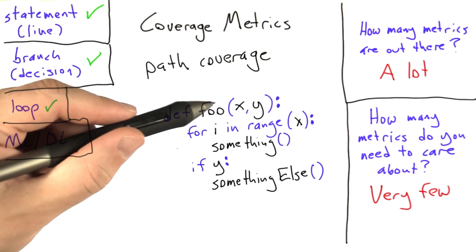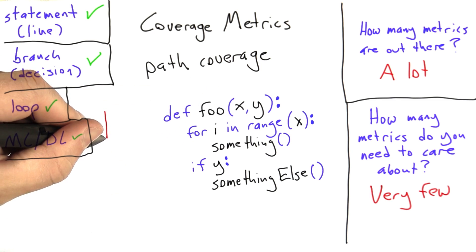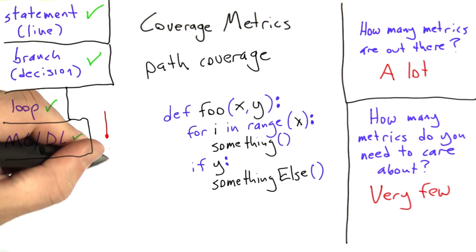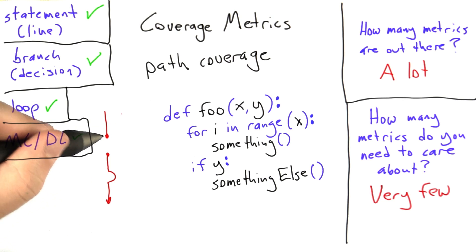So let's first look at the execution if x is 0 and y is true. Range 0 is the empty list, so we're not going to do anything here. And then y is true, we're going to execute something else and leave. So this is one sequence of decisions we made. We made the decision to execute something 0 times and something else once.